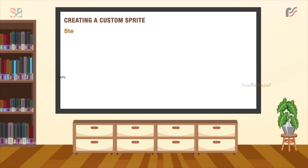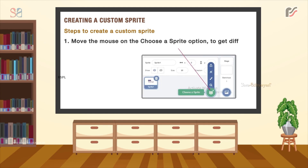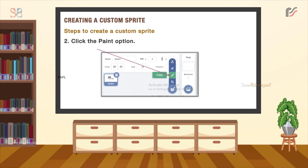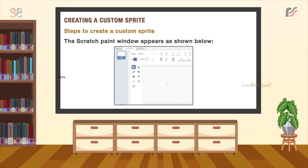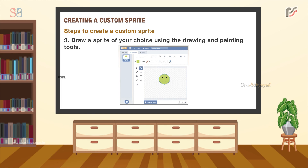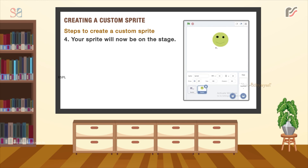Steps to create a custom sprite are: firstly, move the mouse on the 'Choose a Sprite' option to get different options to add a sprite, then click the Paint option. The Scratch paint window appears. Then draw a sprite of your choice using the drawing and painting tools, and your sprite will now be on the stage.